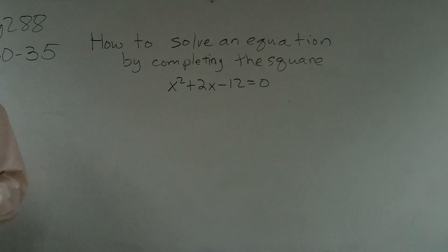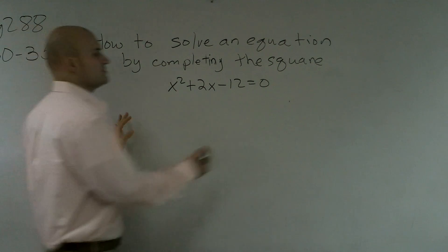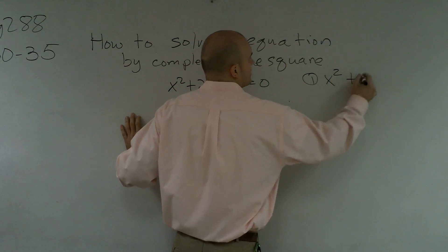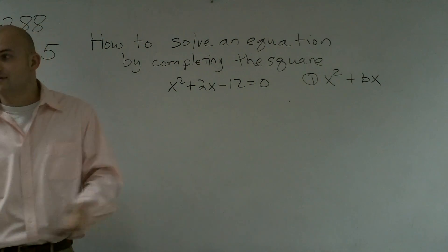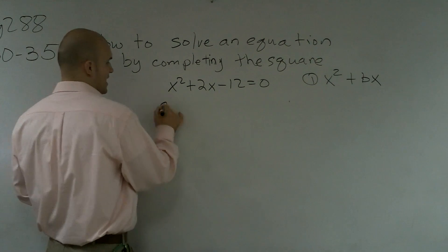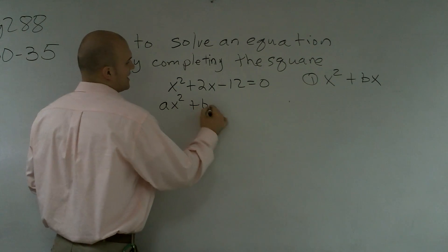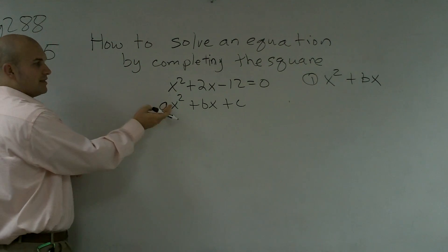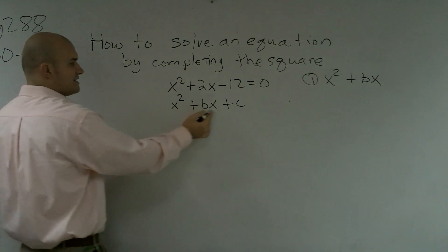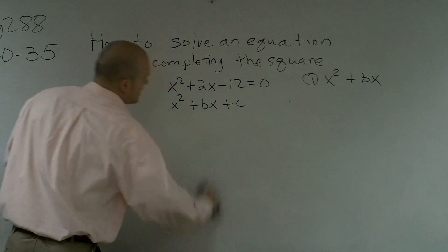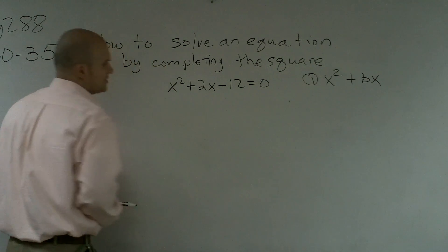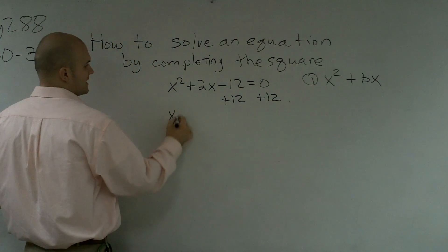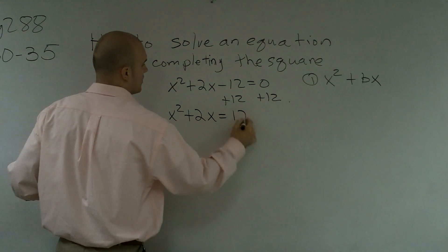the first thing that we want to look at when doing this problem is we want to go through your steps. And the first step is to make sure that we have it in the form of x squared plus bx. What we notice from what we've done prior is we already have it in ax squared plus bx plus c. So it's not in our x squared plus bx form, right? Luckily, we don't have an a, so we can eliminate that. We need to get rid of the c. So to do that, I'm going to add 12 on both sides. Therefore, now I obtain x squared plus 2x equals 12.